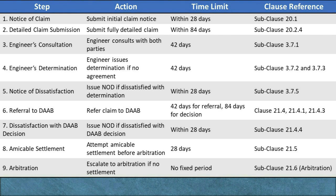To formalize this, the engineer must issue a notice of lapse to the claiming party within 14 days following the expiration of the 84-day submission deadline. If the engineer does not issue this notice of lapse, the notice of claim remains valid. Purpose: This 84-day period ensures that the claiming party has sufficient time to gather and present a comprehensive claim, giving the engineer all necessary information to evaluate the claim's merit accurately.